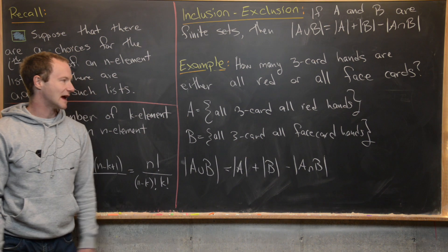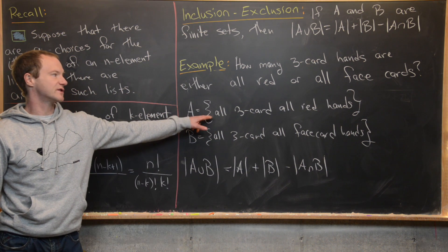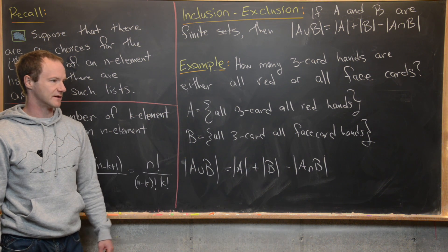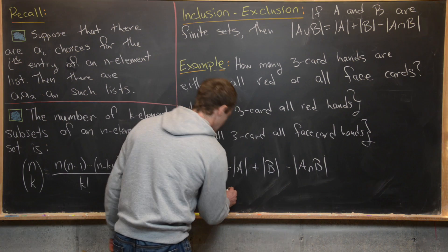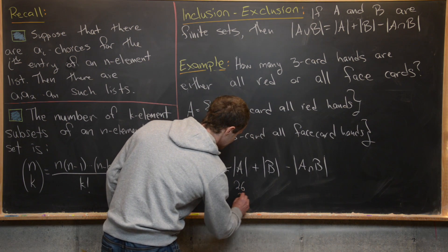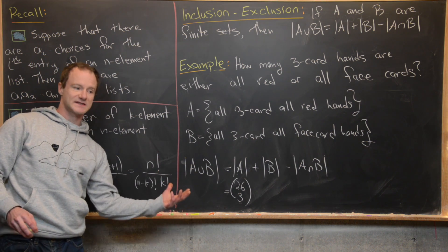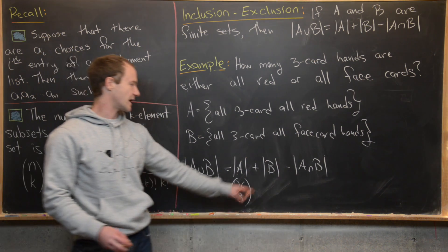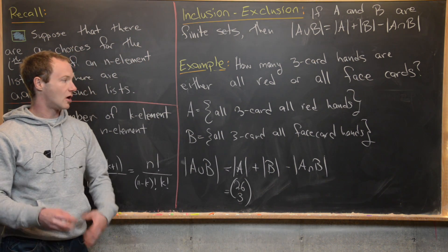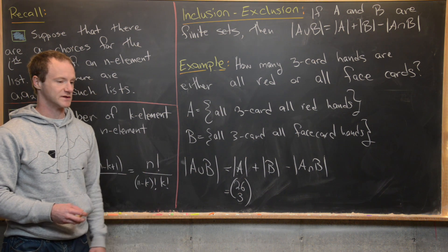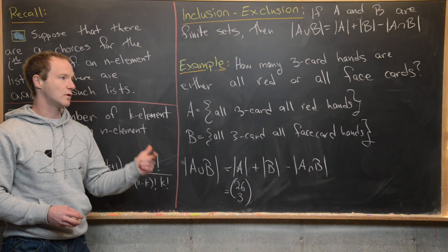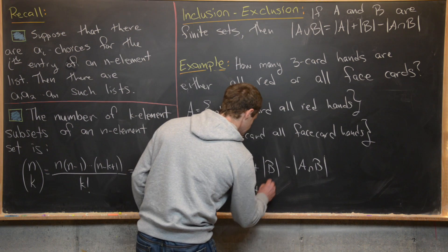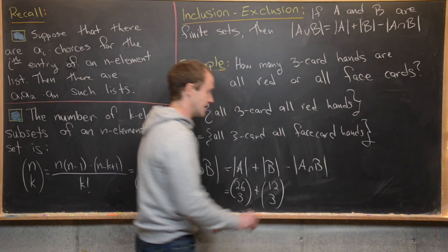To count |A|: we need to choose three cards from all red cards. There are 26 red cards in a 52-card deck, so |A| equals 26 choose 3. For |B|: there are three face cards (Jack, Queen, King) for each suit, making 12 total face cards, so we need plus 12 choose 3.